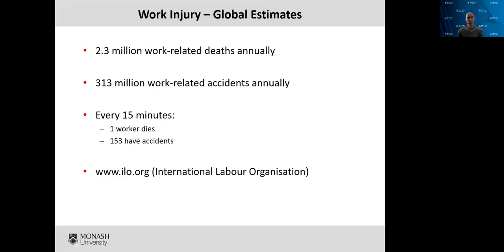Just to get into some estimates of how common injury is and its consequences: there's a whole variety of data sources, and not surprisingly there are lots of different estimates. The key message is that it's a big problem — many millions of people around the world and hundreds of thousands in Australia are injured every year. The International Labour Organization has estimated there are about 2.3 million work-related deaths annually and over 300 million work-related accidents. Translating that to a 15-minute timescale globally: every 15 minutes, one person dies at work and another 153 have an accident.